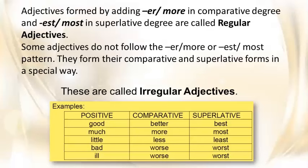Adjectives formed by adding -er or more in comparative degree and -est or most in superlative degree are called regular adjectives. Some adjectives do not follow the -er/more or -est/most pattern — they form their comparative and superlative forms in a special way. These are called irregular adjectives.